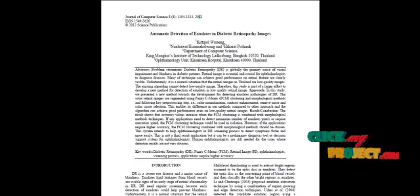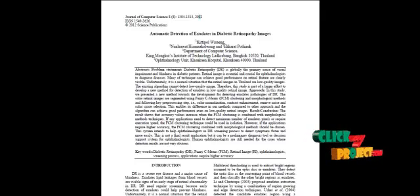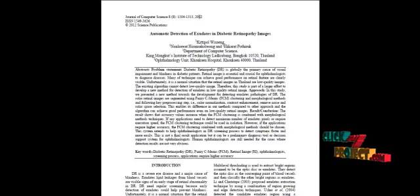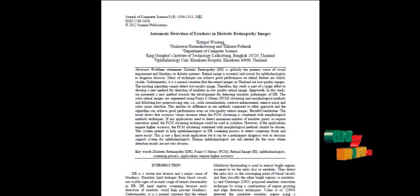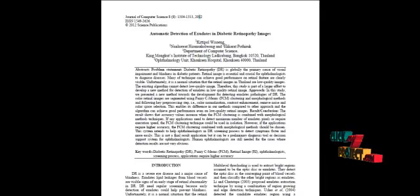Initially, the color channels of the retinal images were separated. A filtering process is done using a Gaussian filter on the retinal images.